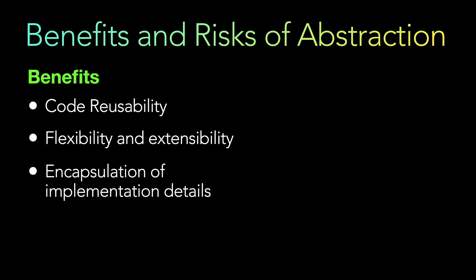Next is encapsulation of implementation details. It is a contract that you are providing — you are not actually exposing any of the code in the abstract class or in the interfaces. It encapsulates the implementation details within the concrete classes, which makes it easier to modify or extend the behavior of a class without affecting the rest of the codebase. For example, you can change the implementation of the make sound method in a class without having to change the contract in the Animal interface.